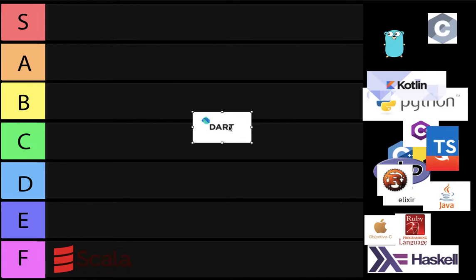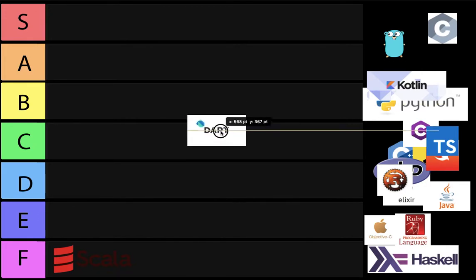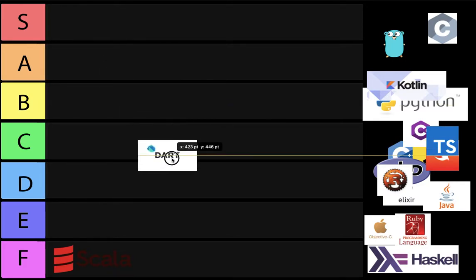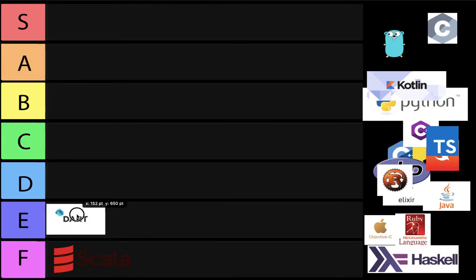Next we got Dart. This language is a newer language — many of you have heard of it, many have not. It's developed and maintained by Google. Those who don't know, it's gonna be a big thing if Fuchsia OS becomes a big thing. Fuchsia OS is written in Dart — it's Google's upcoming OS for phones and computers that will merge laptops and phones together, a multi-paradigm OS. So Dart can be a big thing in the future, but for now it's E tier.